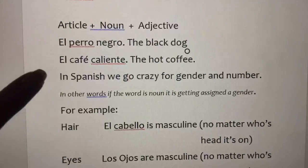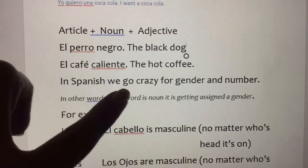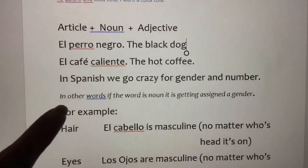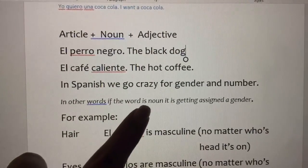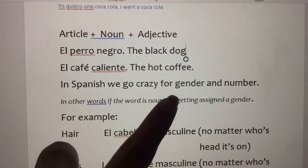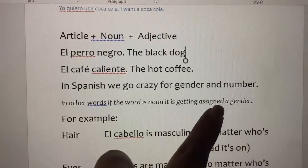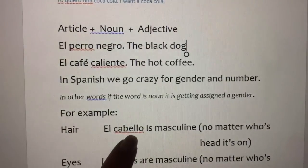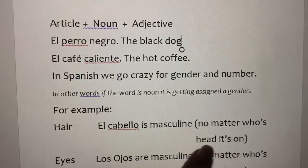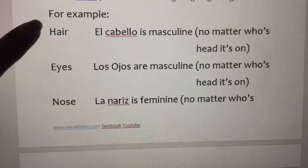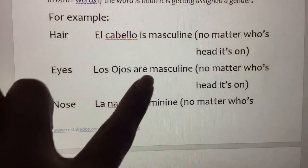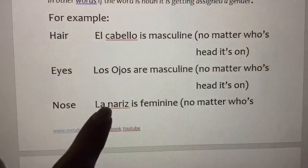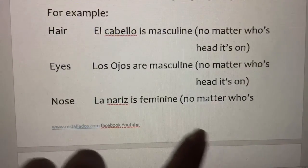In Spanish, nosotros nos volvemos locos por género y número. En otras palabras, si la palabra es sustantiva, ella va a ser asignada un género. Por ejemplo, hair — el cabello — is masculine, no matter whose head it's on. Eyes — los ojos — are masculine, no matter whose head or face they're on. Nose — la nariz — is feminine, no matter whose face it's on.